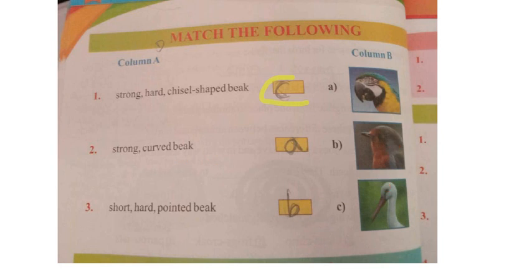Third match: short, hard and pointed beak - the answer is B. That bird has the short, hard and pointed beak. Now moving to the olympiad exercise bits which are given one after another.